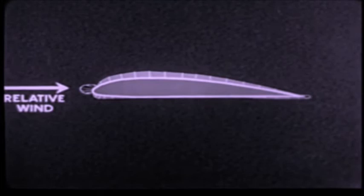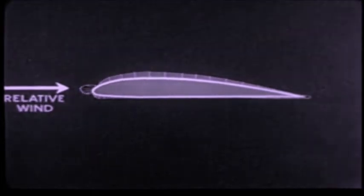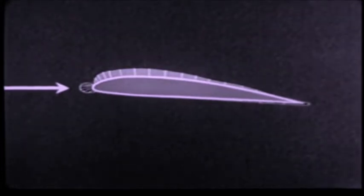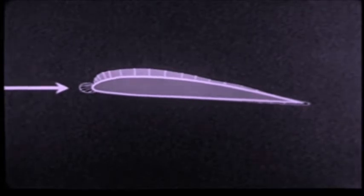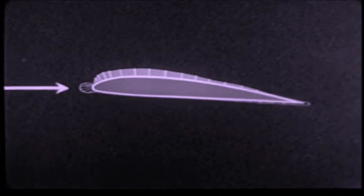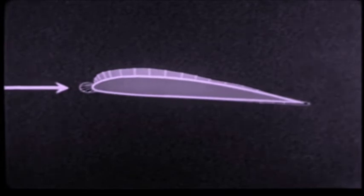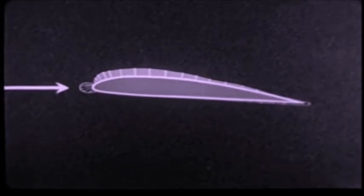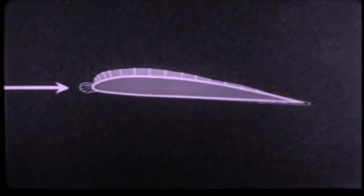Another area of positive pressure encloses the trailing edge and extends forward about one-quarter cord length along the lower surface. Elsewhere, the pressures are negative. As the angle of attack is increased, the positive pressure bulb moves lower down on the leading edge and back along the lower surface of the wing, enclosing the trailing edge. The negative pressure distribution remains fundamentally unchanged, although its values are greatly increased. This diagram indicates that the wing has begun to exert a considerable lift.